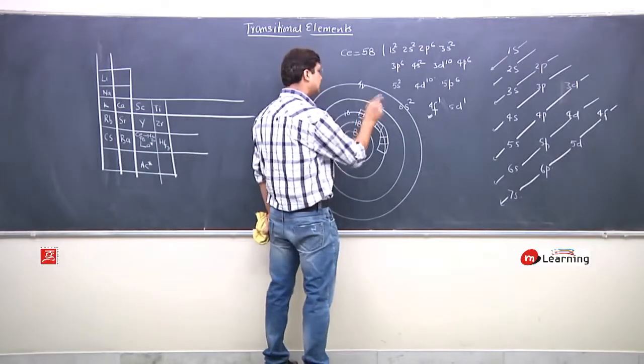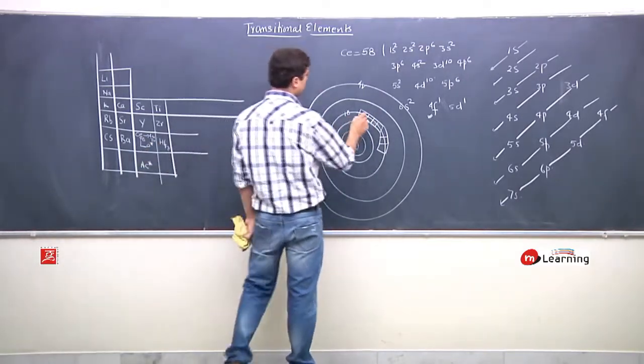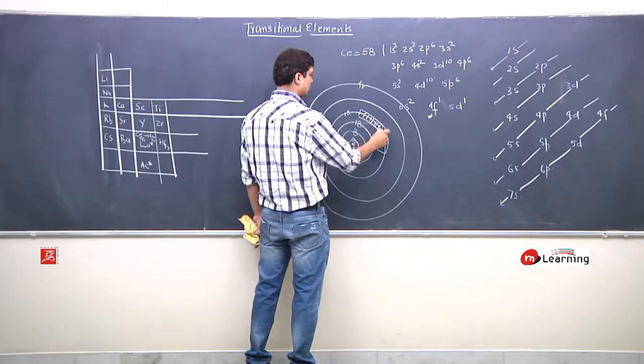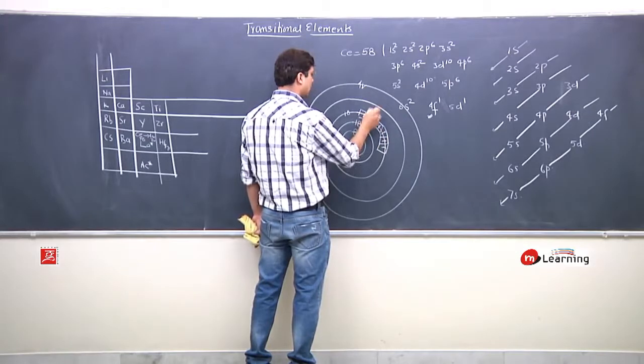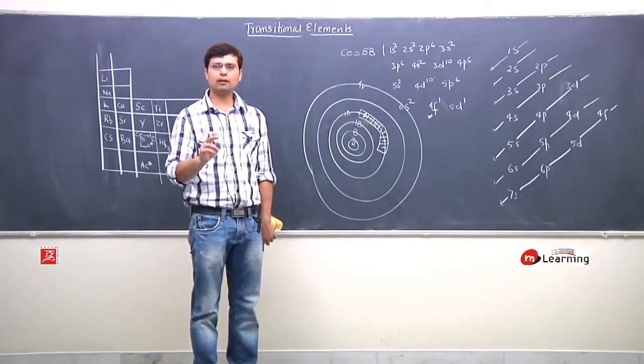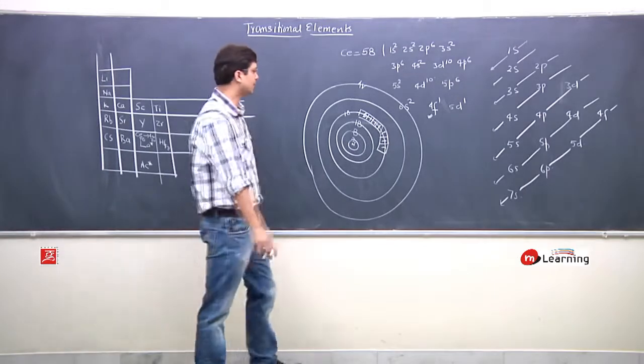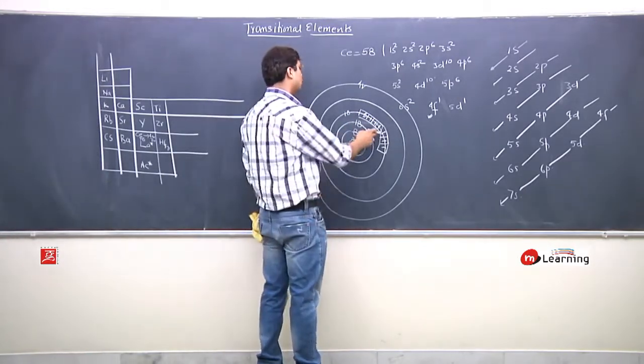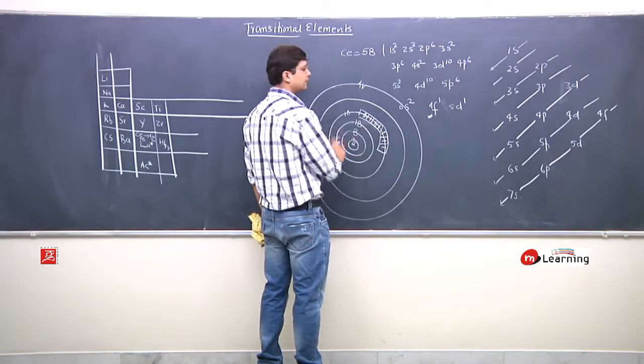Now in the lanthanide series, when one electron comes, the first electron comes, the second electron comes, the third, the fourth, the fifth, the sixth, the seventh, the eighth, and so on.